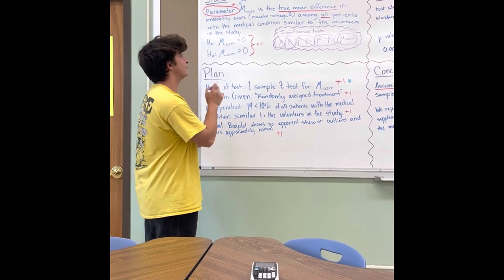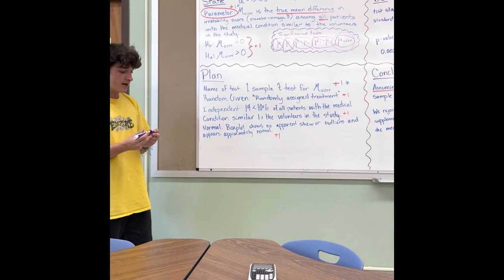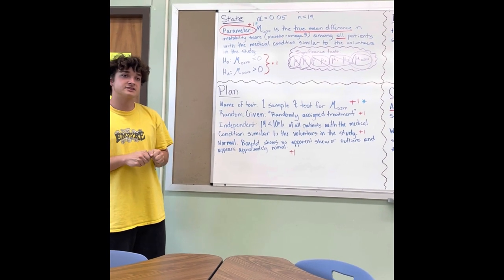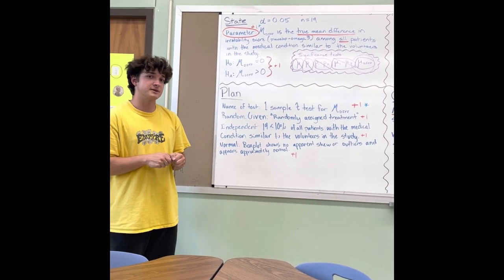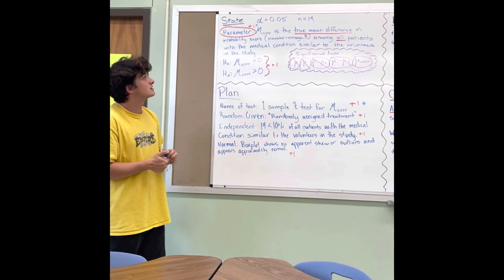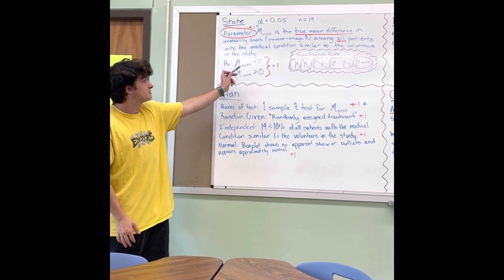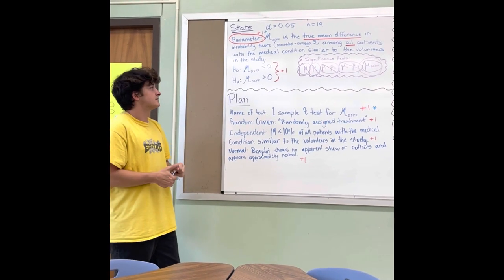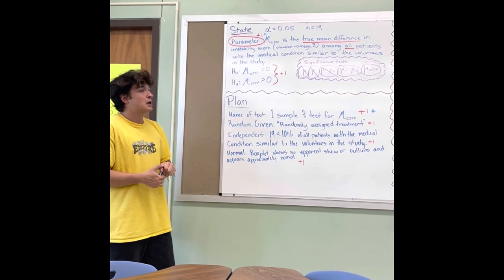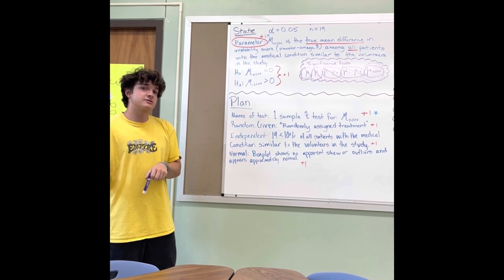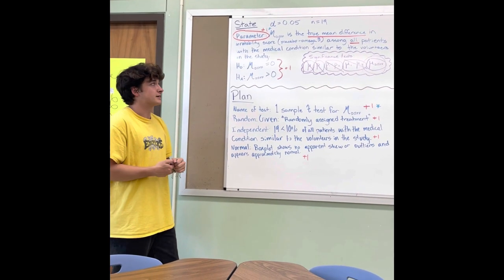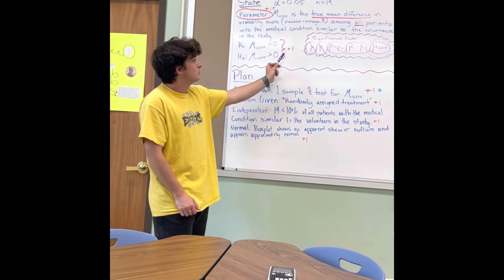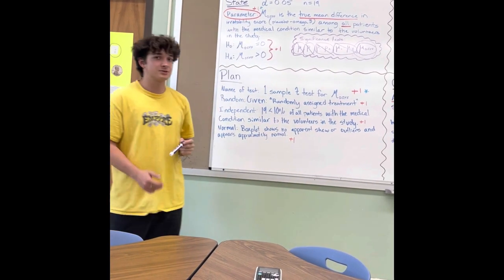We have to state our hypotheses. The null hypothesis is that the placebo had no difference in irritability score compared to omega-3 — placebo minus omega-3 equals zero — so mu-diff equals zero. The alternative hypothesis is that the placebo resulted in a greater irritability score than the omega-3 supplement, so the mean difference would be greater than zero. We get a point for that and a point for stating the parameter.